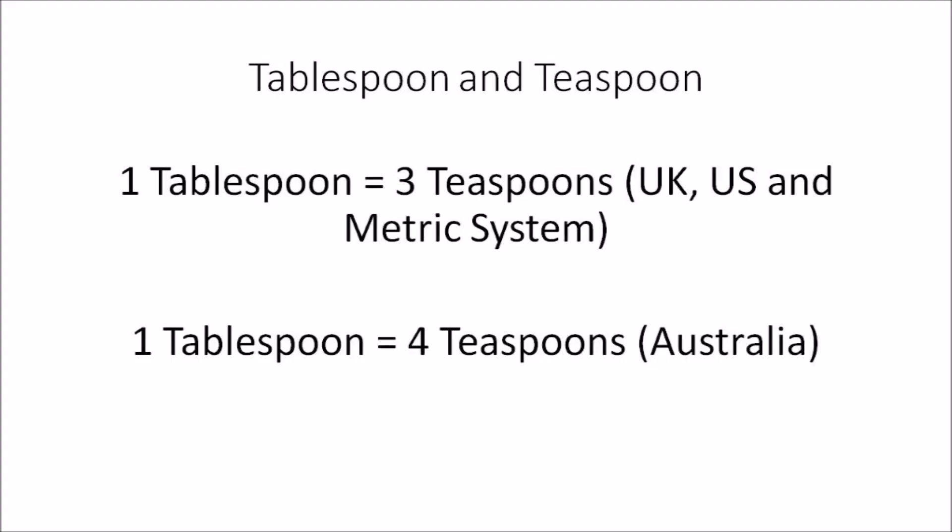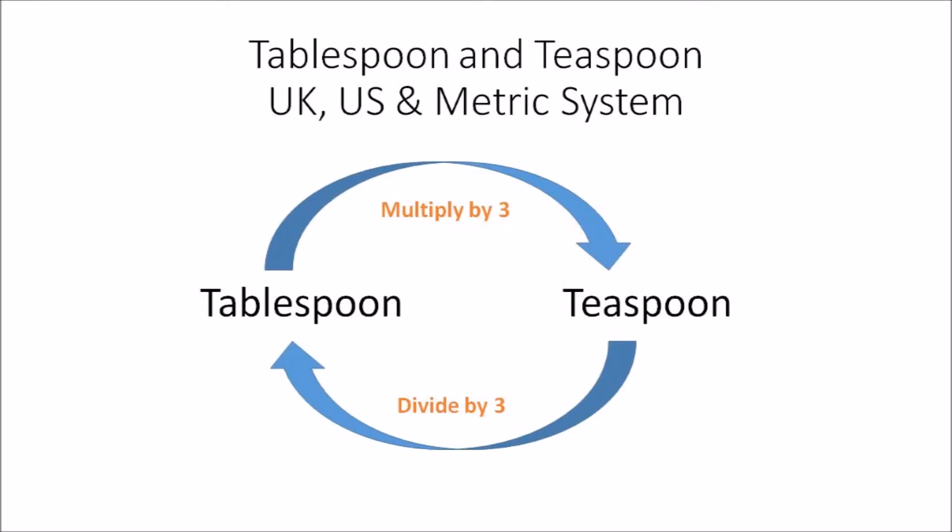There are two types of measurements I'm dealing with. One is the UK, US, and metric system, and the other is the Australian system. In the UK, US, and metric system, one tablespoon is equal to three teaspoons, whereas in Australia, one tablespoon is equal to four teaspoons.